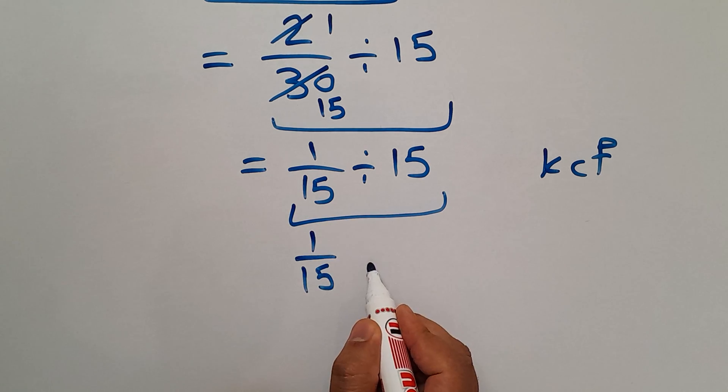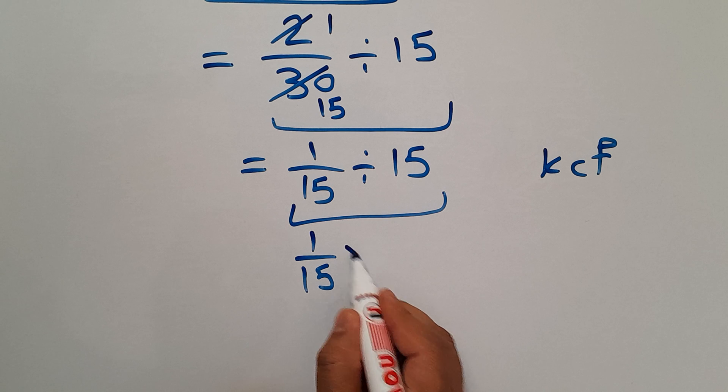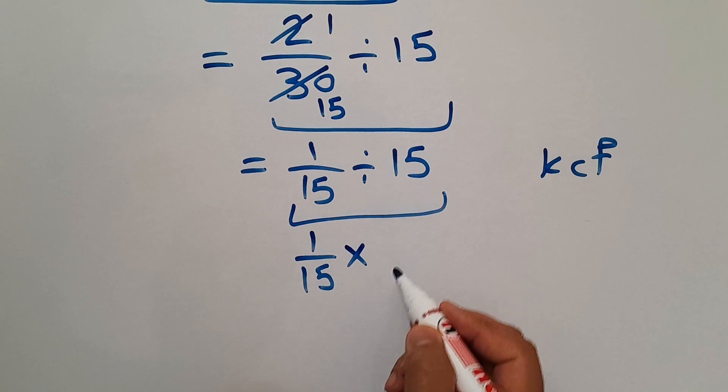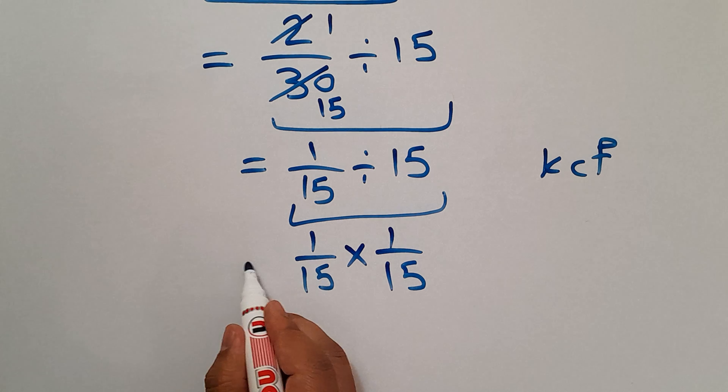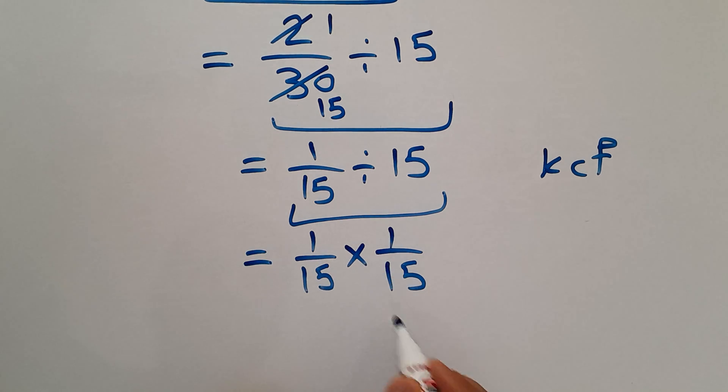Change division to multiplication and flip the second fraction. So we have 1 over 15 times 1 over 15.